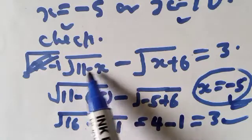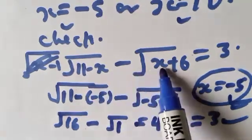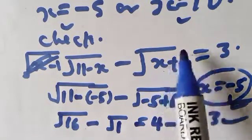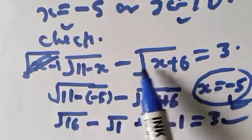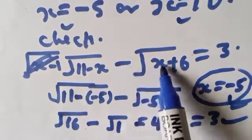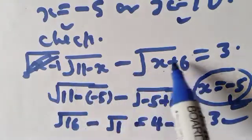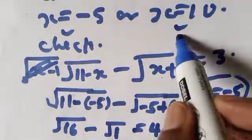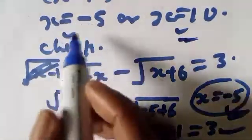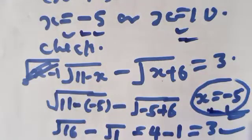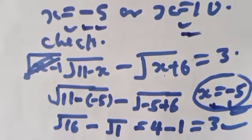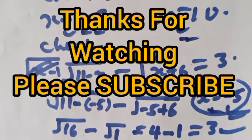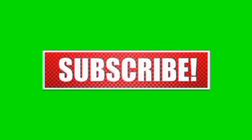Checking X equals 10: substituting into the equation gives square root of (11 minus 10) minus square root of (10 plus 6), which is square root of 1 minus square root of 16, giving 1 minus 4 equals minus 3. This does not equal 3, so X equals 10 does not satisfy the given equation. Therefore, our answer is X equals minus 5. Please don't forget to like, share, comment and subscribe.